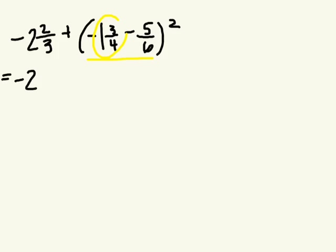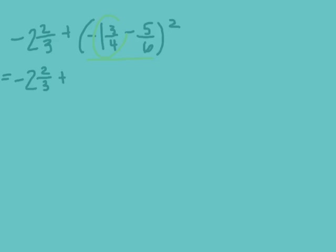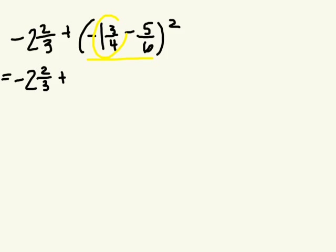So we have negative 2 and 2 thirds plus... Good. So we know it's a negative number. 1 times 4 is 4 plus 3, 7 over 4, but I know it's a negative. Take away 5 over 6. All of this to the power of 2. Have we simplified our brackets yet?